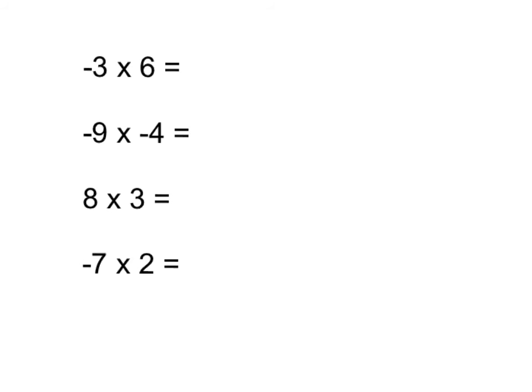For our first example, -3 × 6 is 18, and because the signs are different, there's one negative and one positive, it's -18. Next example, -9 × -4 is 36, and because both numbers are negatives, the answer is positive.